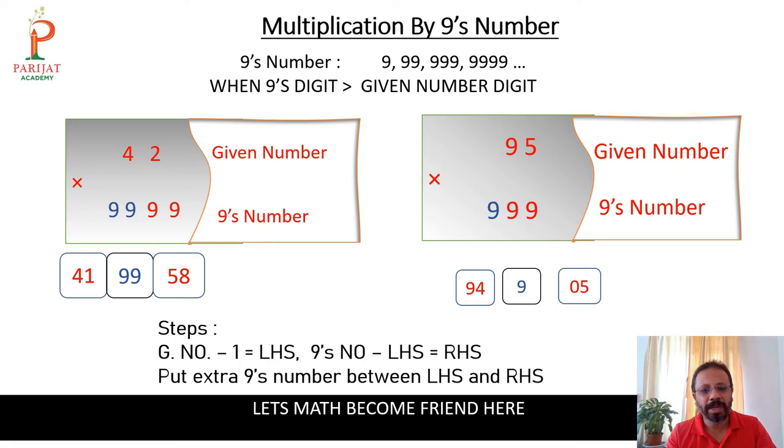You write down the steps: given number minus 1 is equal to LHS means left hand side, and 9's number minus LHS is equal to right hand side. Put extra 9's number between LHS and RHS.